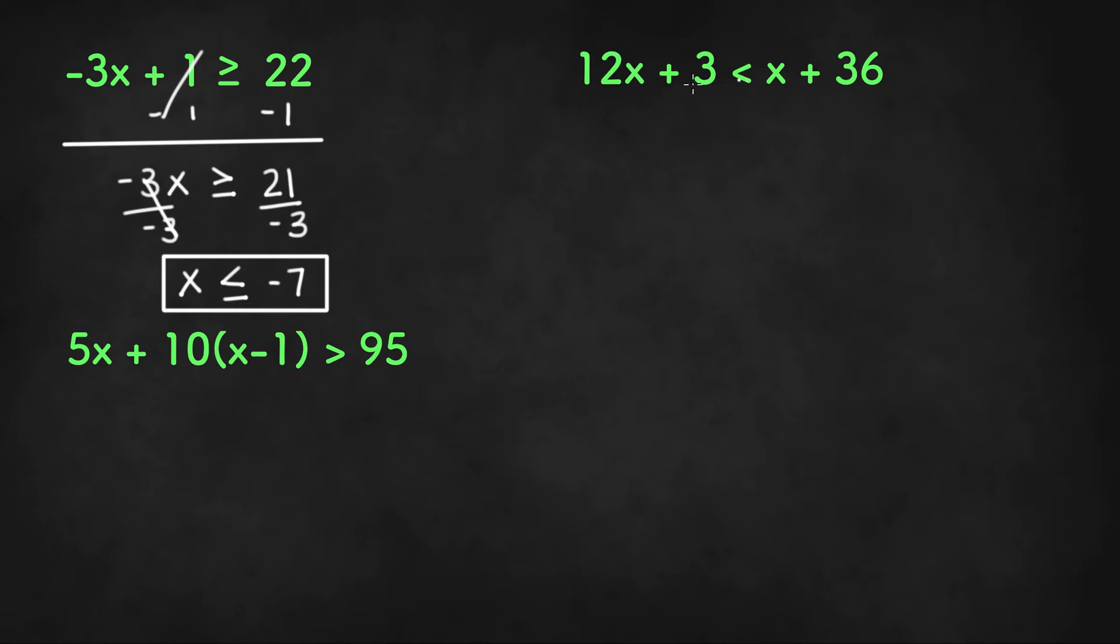Now here we have an example of an inequality where there are variables on both sides of the inequality. So in that case we can start off by doing various different things. We could subtract x right here, or maybe we could subtract the 12x from both sides, or subtract the constants first like 3 or 36.